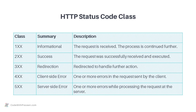The 2xx class is used to denote the success scenarios, signifying to the client that the request was successfully received and executed. The 3xx class is mostly for redirection use cases. The 4xx class is used to capture client-side errors. Finally, the 5xx class is used to capture server-side errors and signify to the client that these errors occurred at the server side.